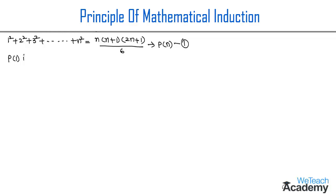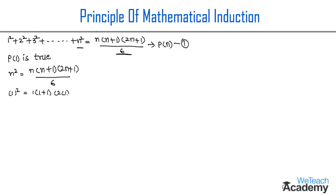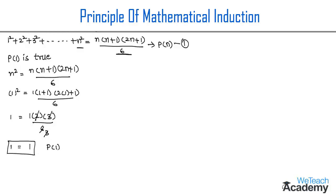First, let us prove that P(1) is true. Substituting n = 1, we get 1² = 1·(1+1)·(2·1+1)/6. This simplifies to 1 = 1·2·3/6, which gives 1 = 6/6 = 1. Since LHS equals RHS, we conclude that P(1) is true.